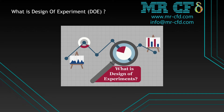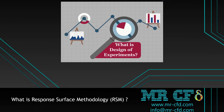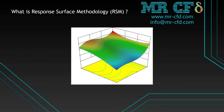Response Surface Methodology (RSM) is a set of mathematical methods for determining the relationship between one or more response variables and several independent variables. RSM aims to optimize the response or output variables affected by several independent input variables. This method achieves the best response surface by discovering each design variable's optimal response level.